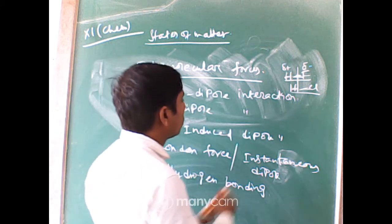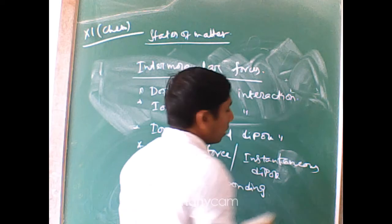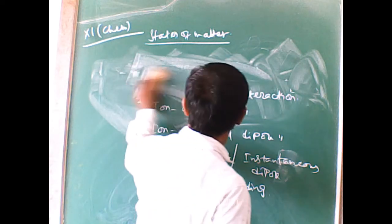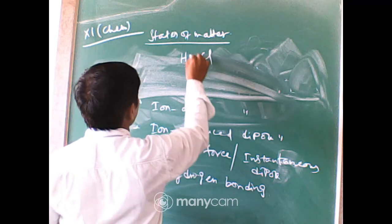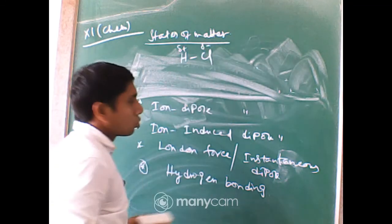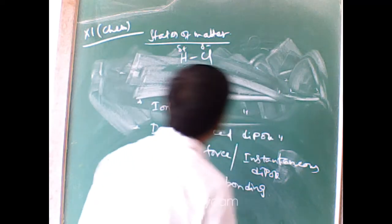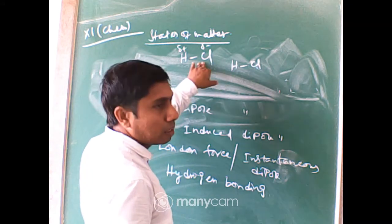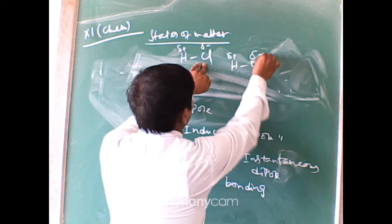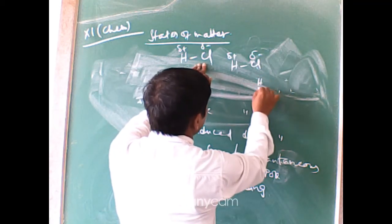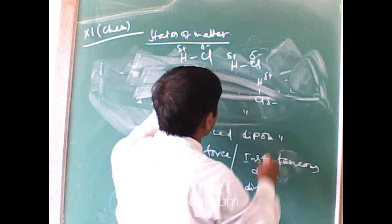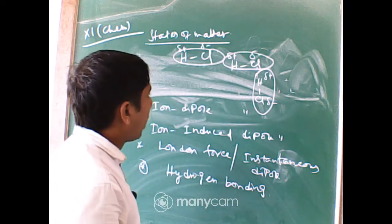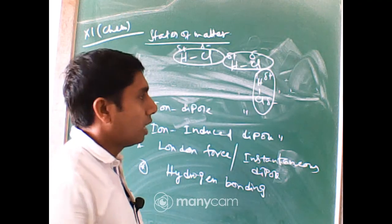In dipole-dipole interaction, consider an aggregation of HCl molecules. Each HCl has a δ+ on hydrogen and δ− on chlorine. The δ+ part of one molecule is attracted to the δ− part of an adjacent HCl molecule. This arrangement of molecules according to their dipoles is called dipole-dipole interaction.